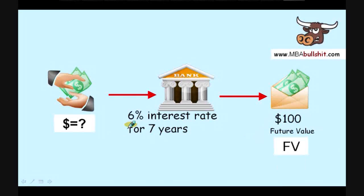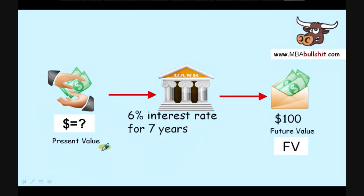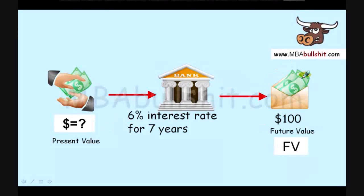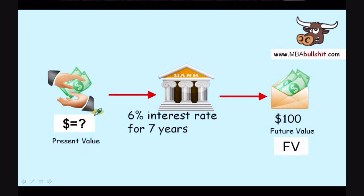And this money — the amount that your grandmother gave you before the seven years — is called present value or past value. It depends on how the story is told. If $100 is today, then the earlier amount is called past value. But if your grandmother gives the money to you today and in the future you get $100, then the money today is called present value.